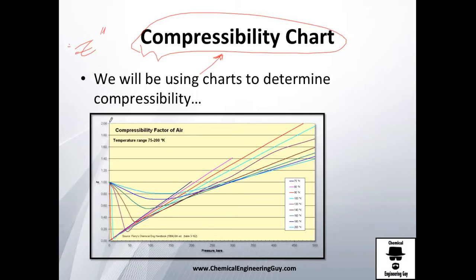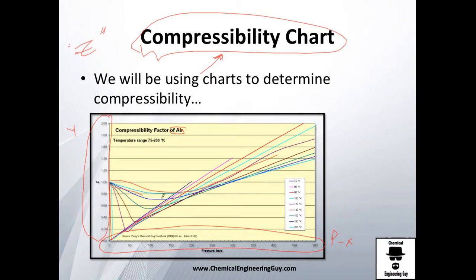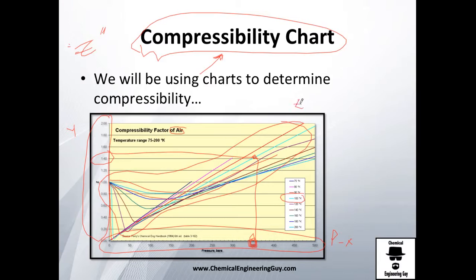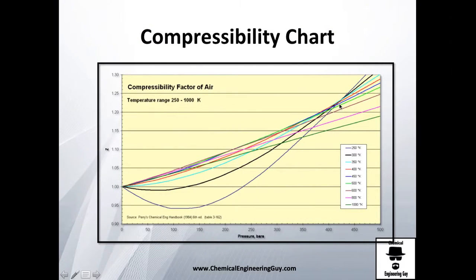Essentially, imagine you have the Z value as the y-axis and pressure on the x-axis. You do this exercise for air at one temperature, then another temperature, and many temperatures, so you have different curves. You choose a value — say pressure of 350 and temperature of 100 Kelvin — then you go directly to read the compressibility factor, for example 1.4, and so on.